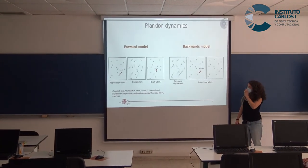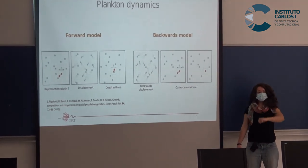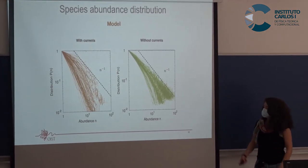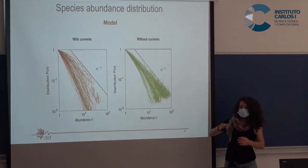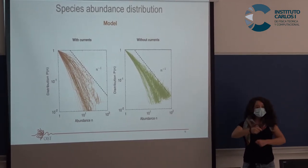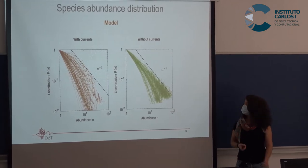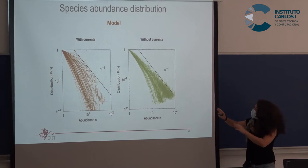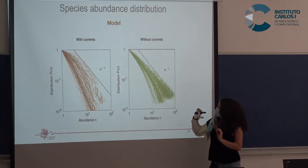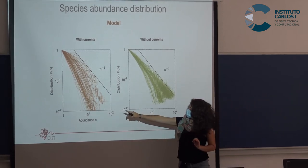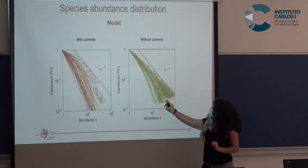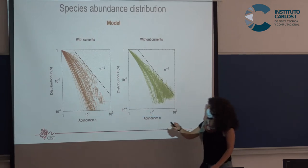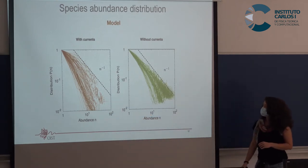With these dynamics, we measure what we are interested in: the species abundance distribution. We simulate many flux parameters and obtain the species abundance distribution for each. Quantitatively, we first see that if we compare the model with currents versus without currents, there are differences — in general, the distributions are steeper with currents.